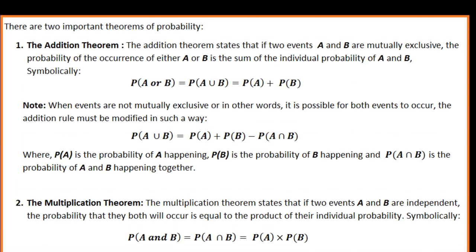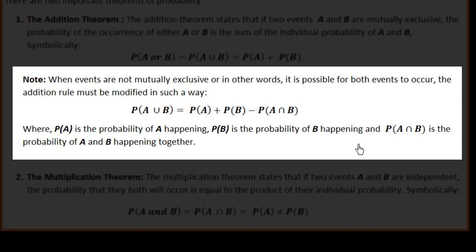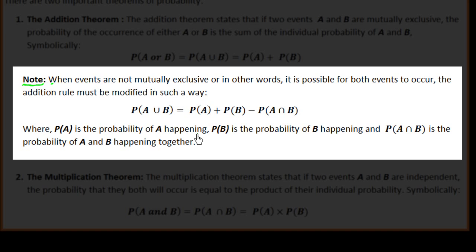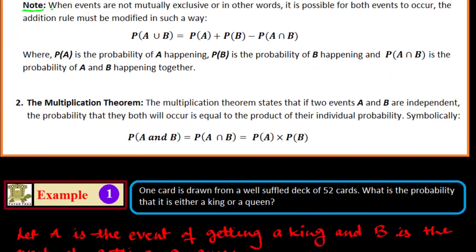Now look at Case 2, when the events are not mutually exclusive — in other words it is possible for both events to occur. The Addition Rule must be modified: P(A∪B) = P(A) + P(B) − P(A∩B), where P(A) is the probability of A happening, P(B) is the probability of B happening, and P(A∩B) is the probability of A and B happening together.